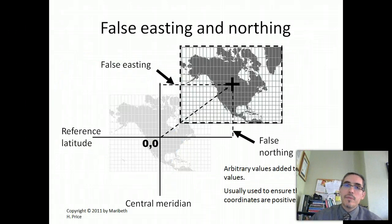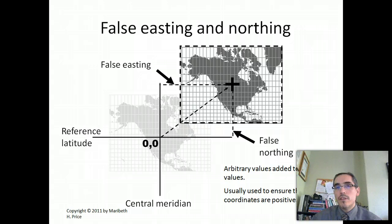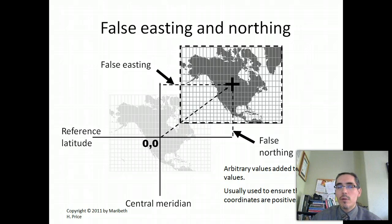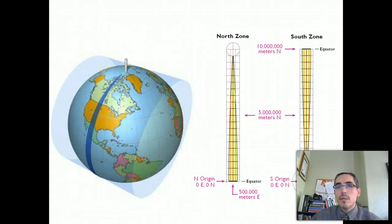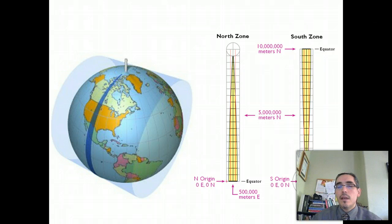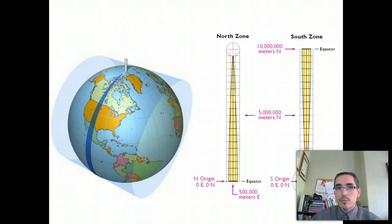Within the UTM system, it uses a false origin. All that means is that we shift the numbers — we make them much larger — so that they're always going to be positive, so there's no chance you could end up with a negative coordinate. On a practical level, we're working with fairly large numbers because the origin, when working with UTM, is going to be on the equator, which is thousands of kilometers to the south (working in meters). The origin for eastings is going to be about 500,000 meters to the west of the central meridian within that zone.